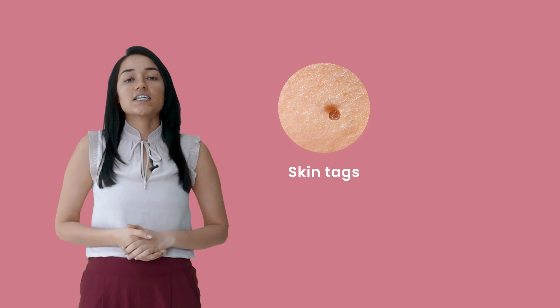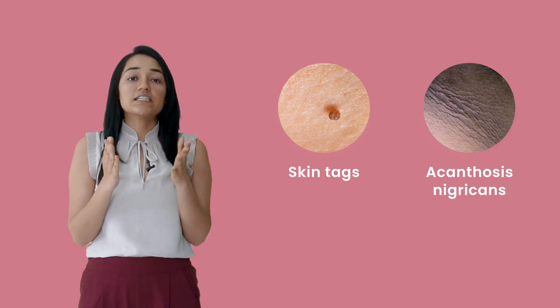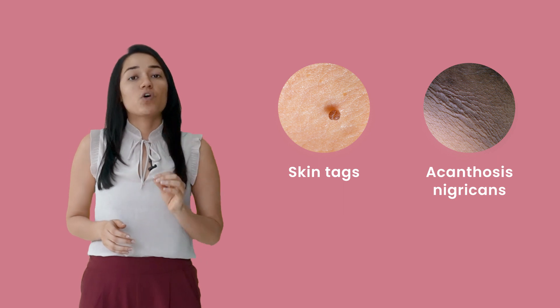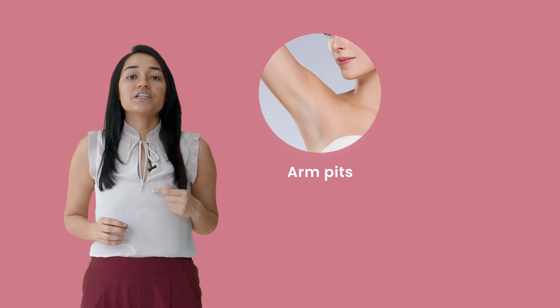The presence of skin tags and acanthosis nigricans, which is basically a skin condition that leads to dark velvety patches in body folds and creases, typically affects your armpits, neck, and other parts of the body.